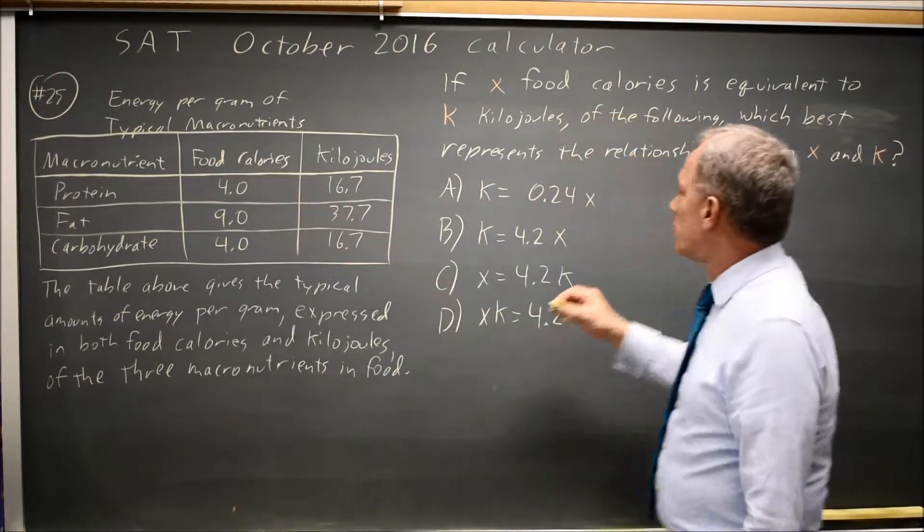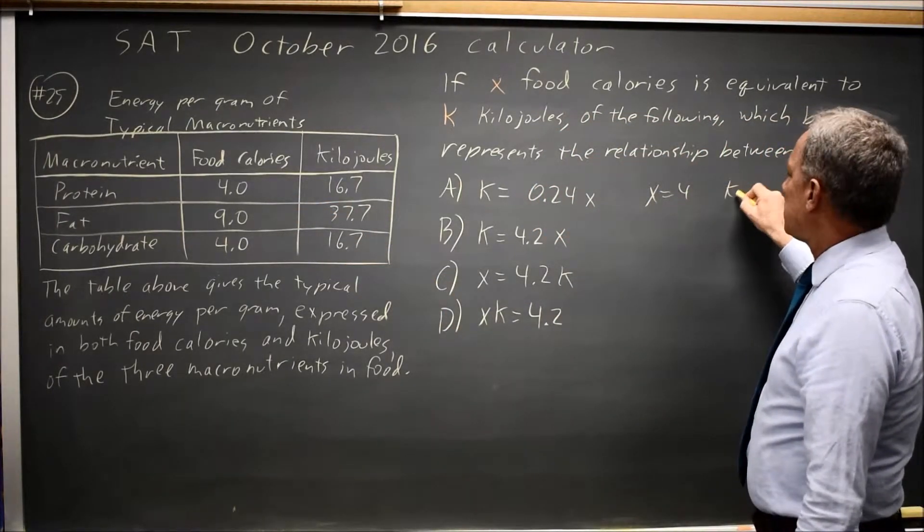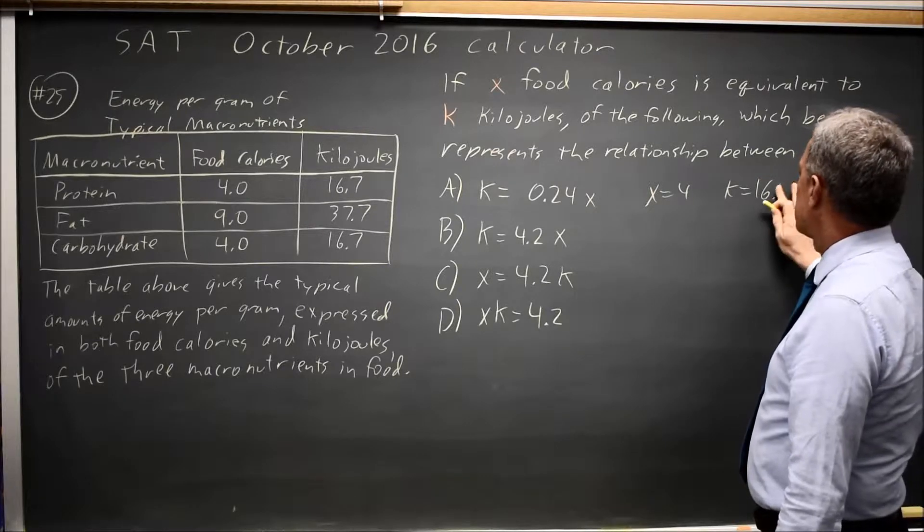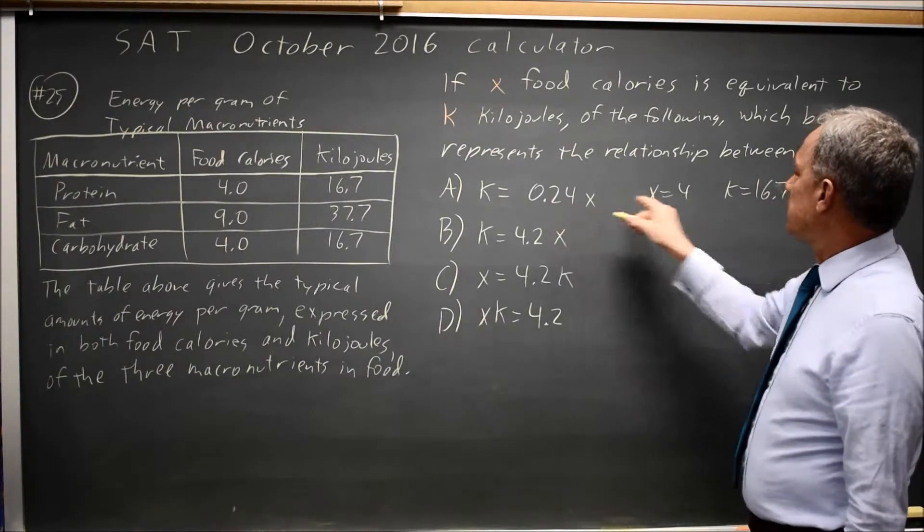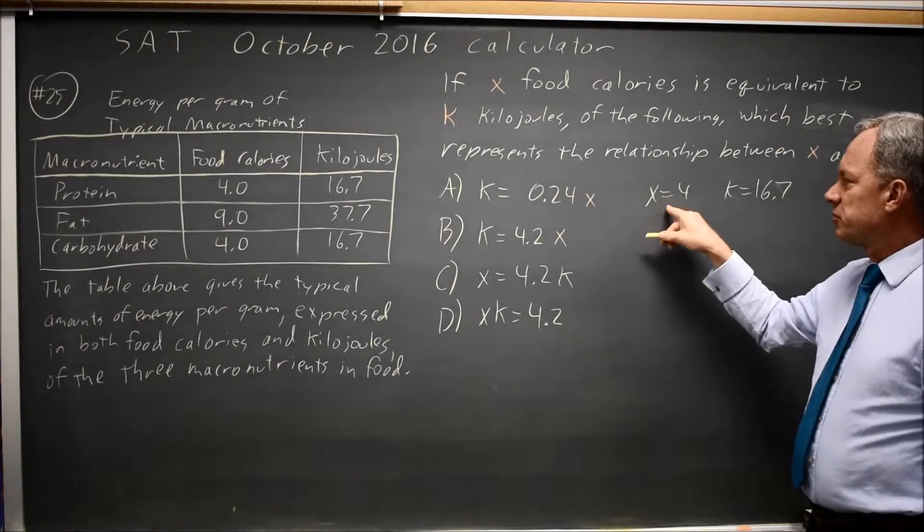So if x equals 4, k equals 16.7, and the question is, is 16.7 equal to 0.24 times 4?